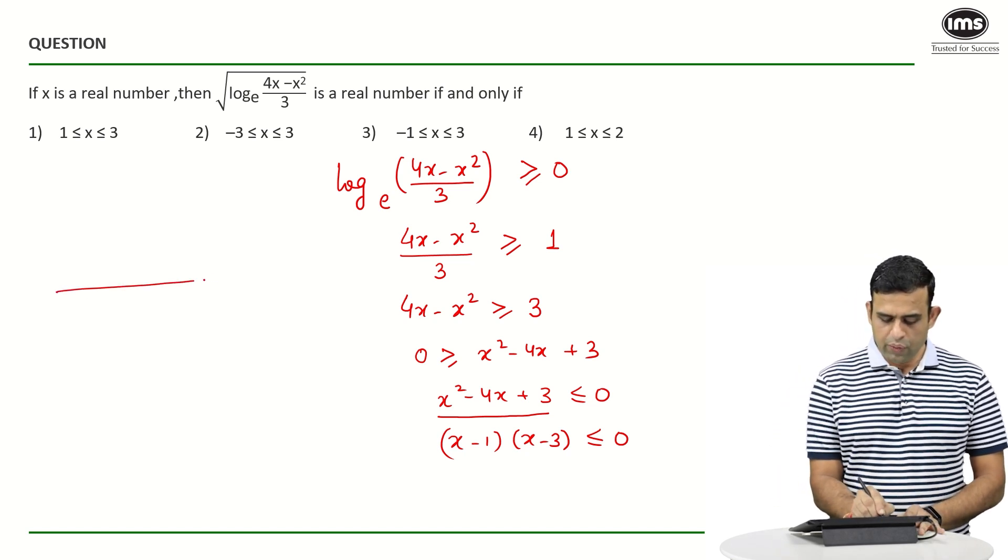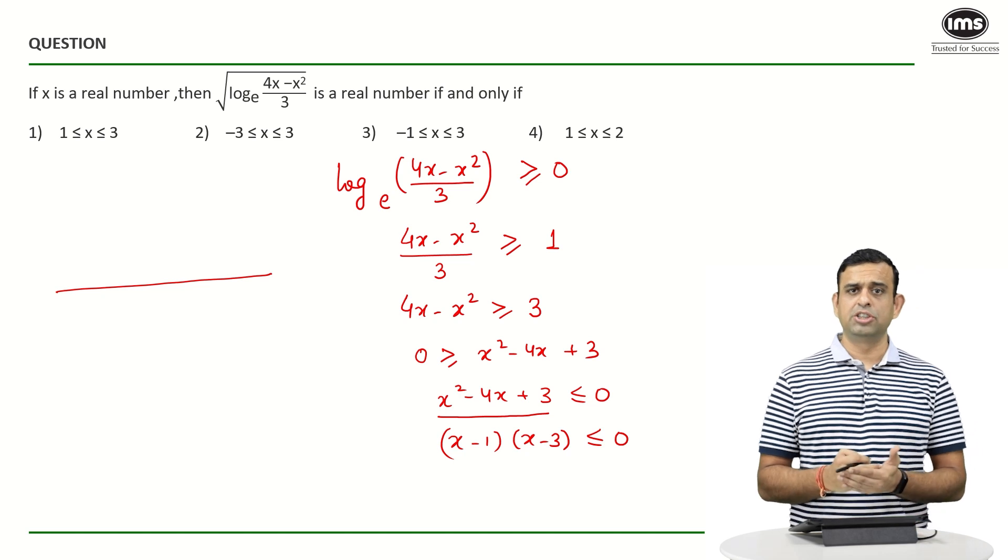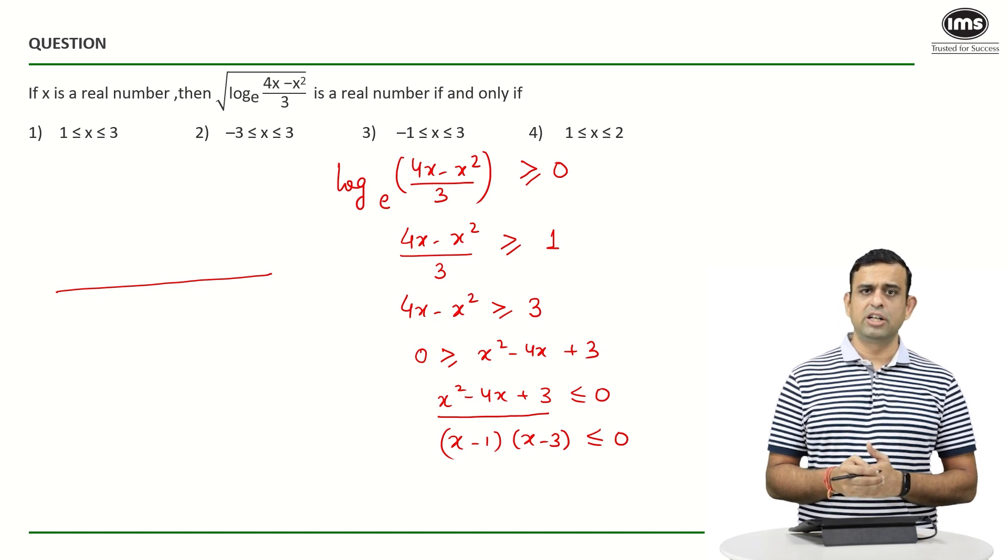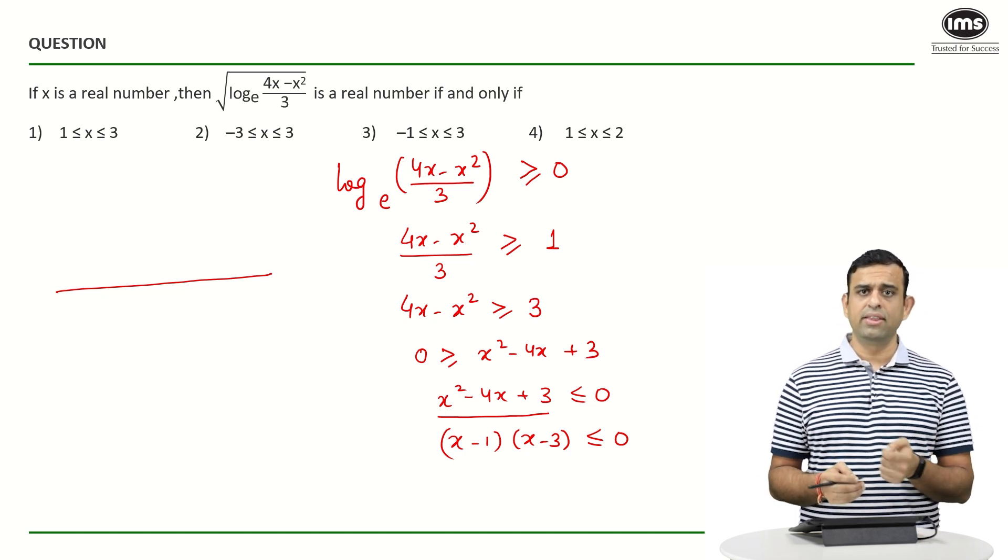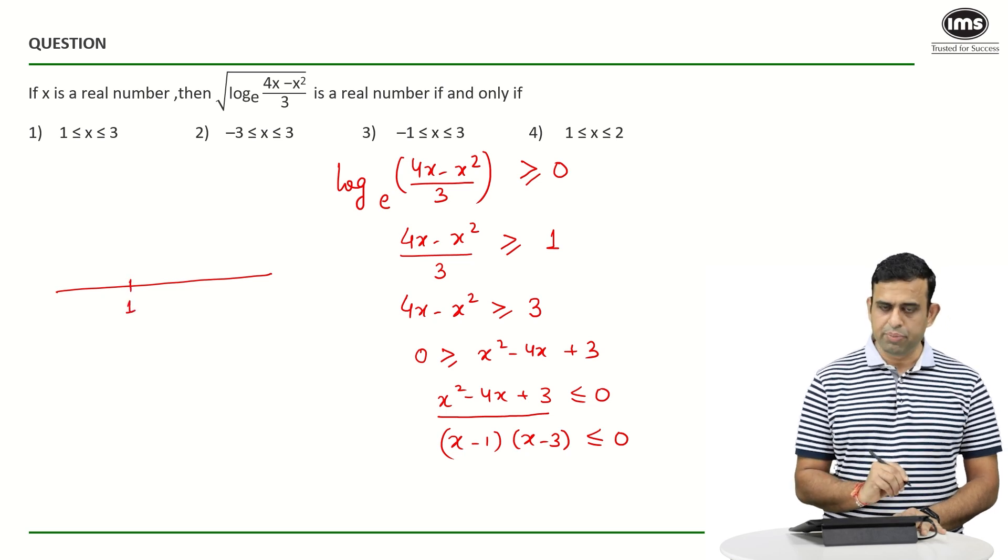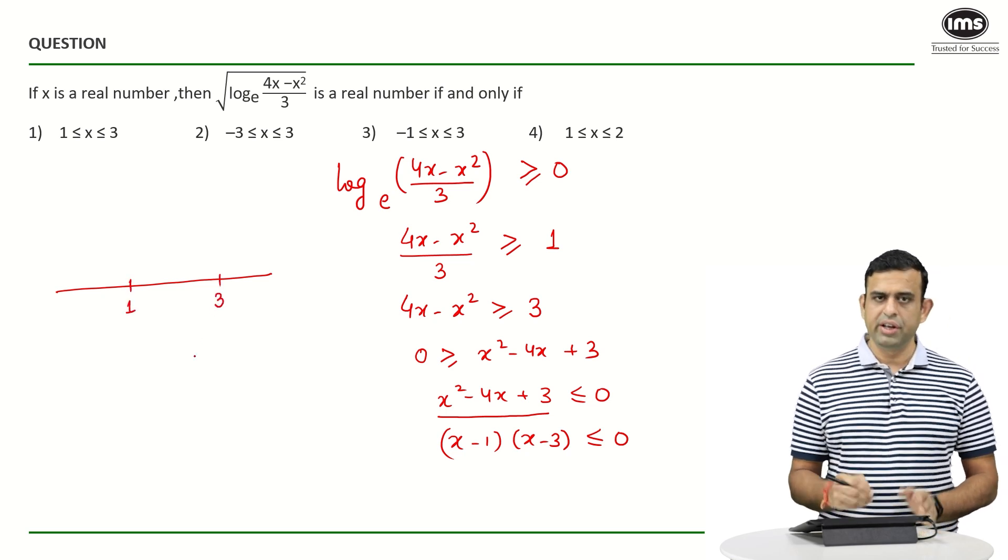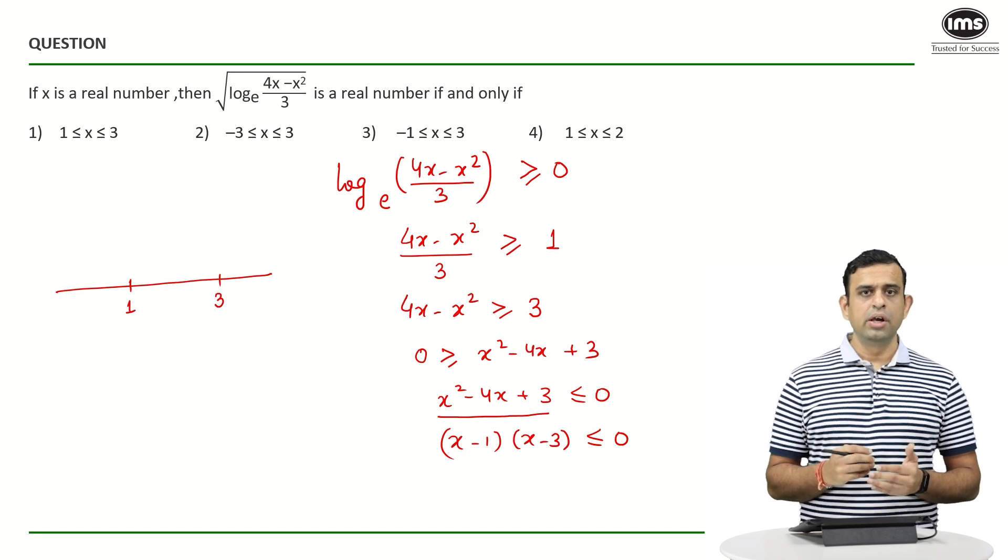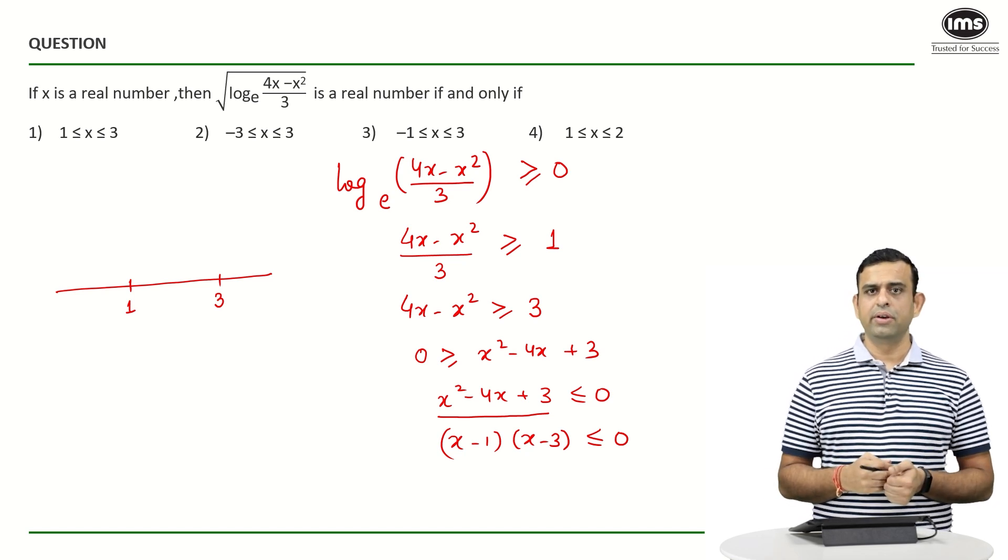What value of x will make the expression equal to 0? The obvious answer has to be the critical values which are 1 and 3. For x = 1, the expression becomes 0; for x = 3, the expression becomes 0. If x is more than 3, both brackets are going to be positive.